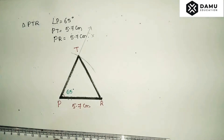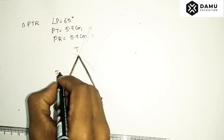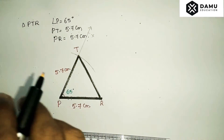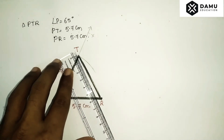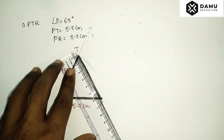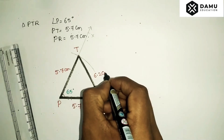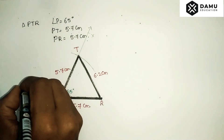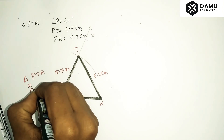Triangle PTR is now constructed. PR and PT are both 5.7 centimeters, and TR is approximately 6.2 centimeters. Triangle PTR is constructed.